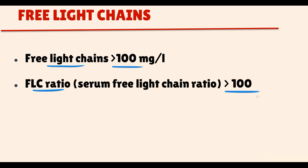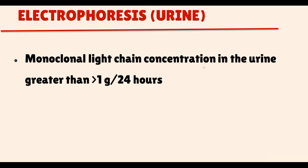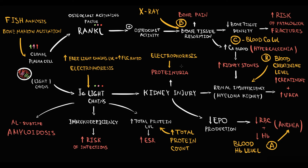By electrophoresis, we can also determine the amount of monoclonal immunoglobulins in the urine. The presence of a monoclonal light chain M-spike in the urine — also called Bence Jones protein — with a concentration greater than 1 gram per 24 hours, is one of the major features of multiple myeloma.